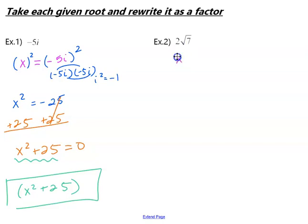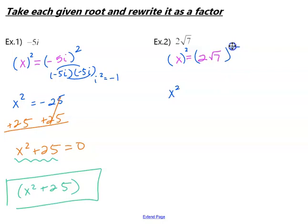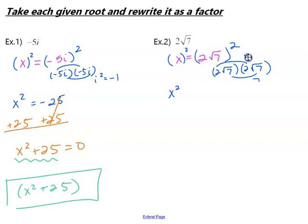Our first step: we set our root equal to x. Then, putting parentheses on the whole side is important before you square it. Our left side is just x squared. And whenever something is squared, that means you have two of those multiplied by each other. So the numbers outside: 2 times 2 gives us 4. Square root of 7 times square root of 7 gives us 7. So 2 root 7 squared is actually 4 times 7, which gives us 28.